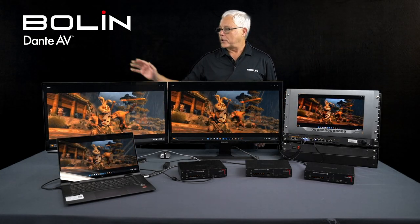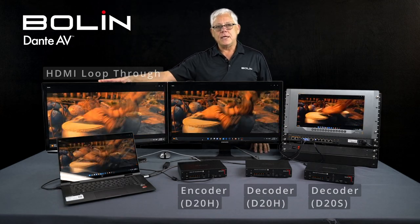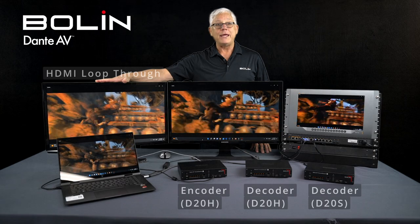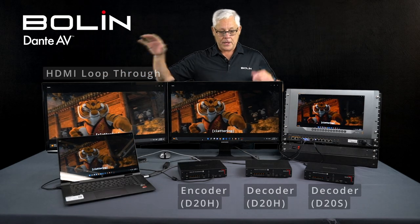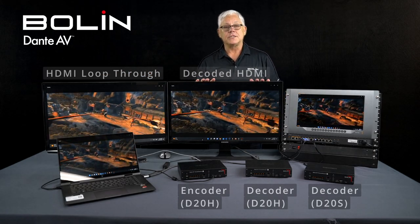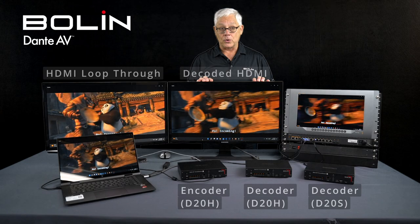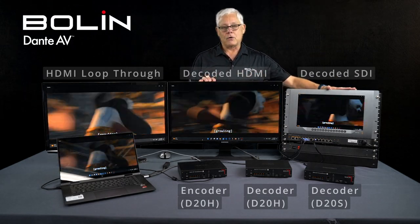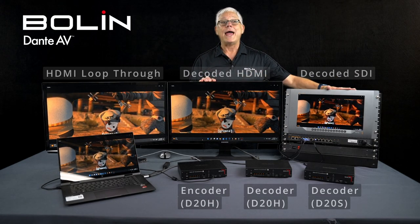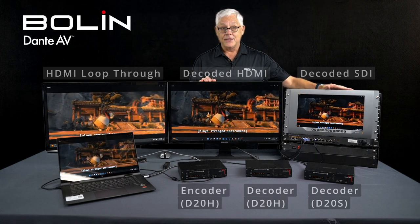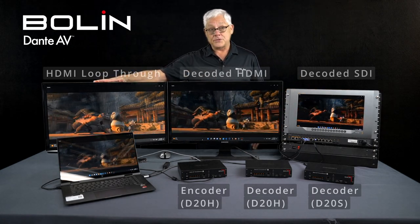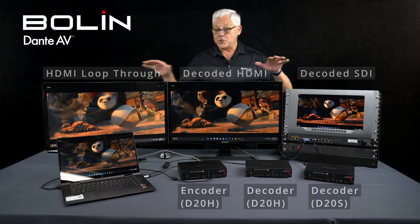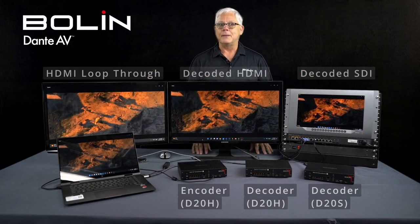As a reminder, this monitor is the HDMI loop out from the encoder, so this is pre-encoding. This monitor is across the Dante AV network from the decoder, straight from HDMI. This one is across the Dante AV network coming out SDI. So straight from the source, over the network, over the network — as you can see, that's really impressive.